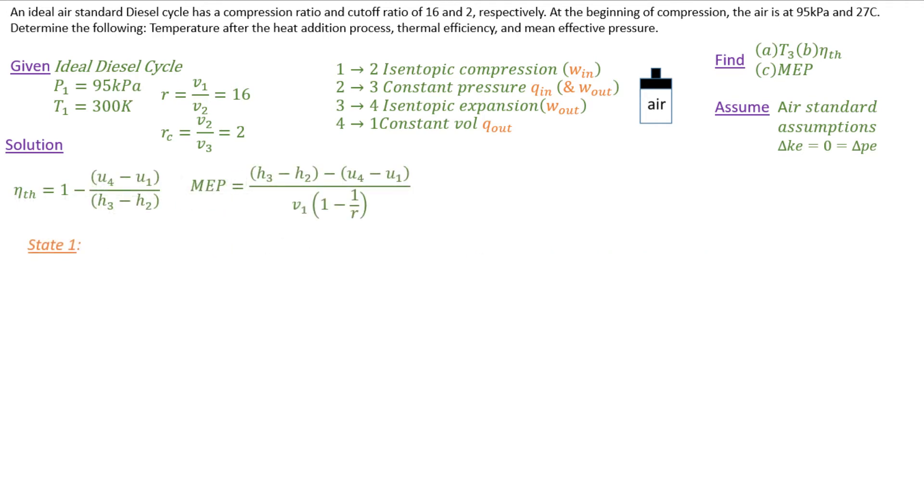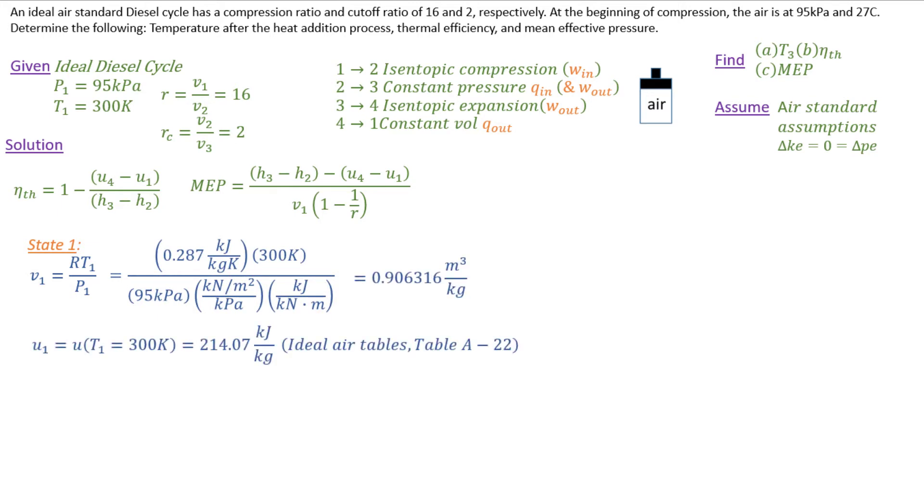All right, so I'm going to work my way around and get T3 as I go, solving each one of my states. So at state 1, I need to calculate what my specific volume is. Once again, like normal, I'll apply my ideal gas law and get a number there. My internal energy can be read right off the table at 300 Kelvin, which is 27 degrees Celsius.